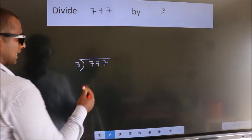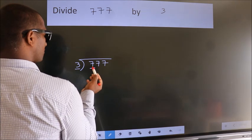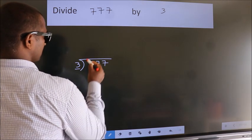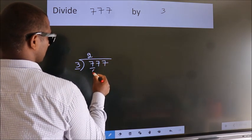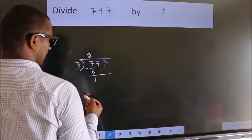Next. Here we have 7. Here 3. A number close to 7 in the 3 table is 3 times 2 is 6. Now we should subtract. We get 1.